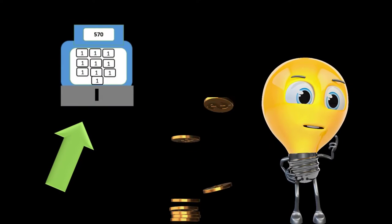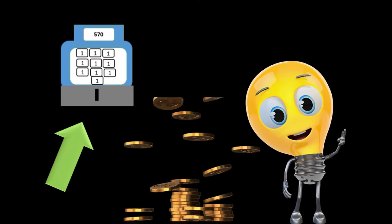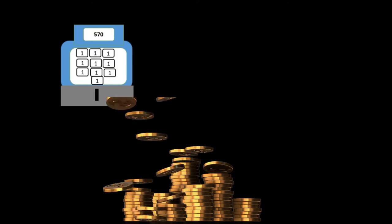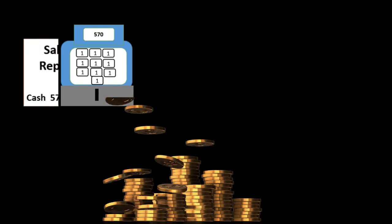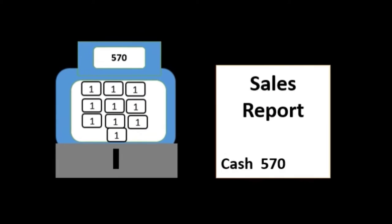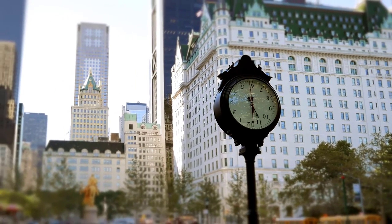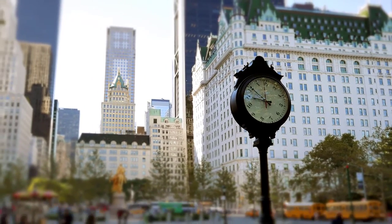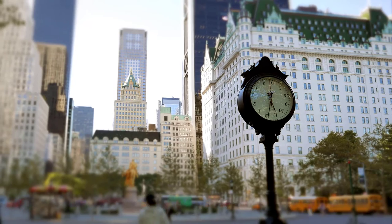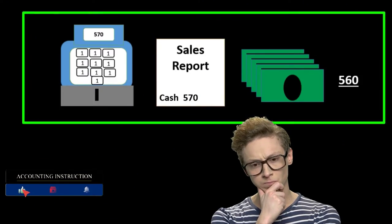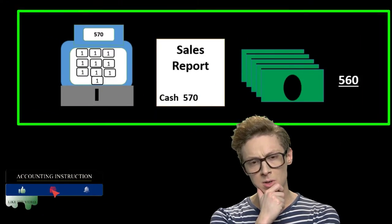For example, if we had a cash register recording cash as sales go through for a certain time period — whether that be a day, a week, or a month — we can generate a report that will show us what the cash sales should be for that time period. If we actually count the cash and have something different, in this case the count being $560 and the report being $570, we're going to have to record that difference.